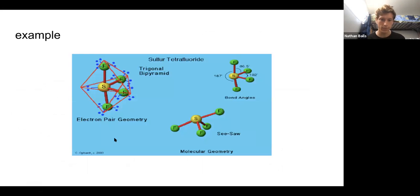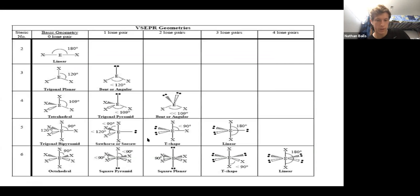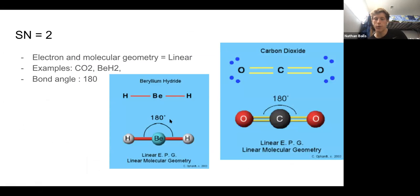Here's an example: SF4. The electron geometry of this would be trigonal bipyramidal. But since we have one lone pair, it becomes a seesaw. So the electron geometry is trigonal bipyramidal and the molecular geometry is seesaw.